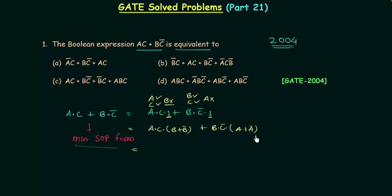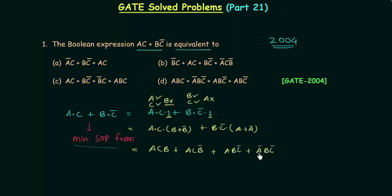When you open these two brackets you will have canonical or standard SOP form. So we get: ACB or ACB complement or ABC complement or A complement BC complement. When you see the options you will find option D is the correct option for the first problem.